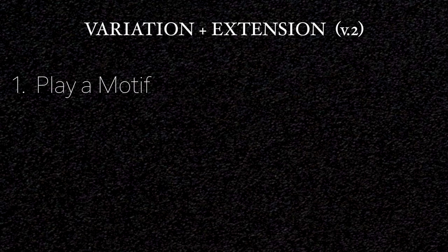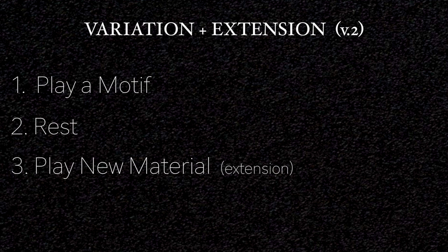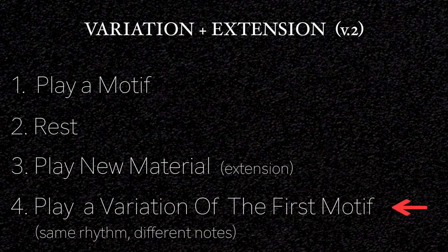Another way of using Variation Extension — and this one is actually my favorite — is placing the new material before playing the variation rather than after. You play a motif, you rest, then you play the extension which is new material, and then as soon as you're done playing that extension you immediately play a variation on the first motif. That variation keeps the same rhythm of that motif but uses different notes.